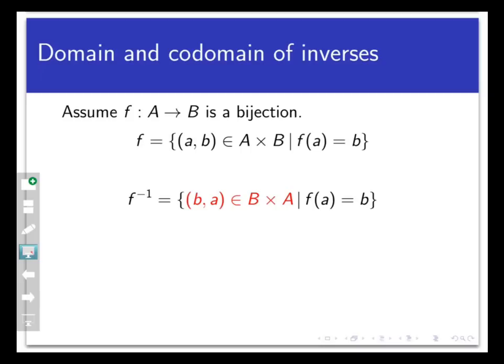For the duration of this video, let's assume that f going from A to B is a bijective function. That means that not only does f inverse exist as a set of pairs, but that f inverse is a function itself. Let's think about the domain, the codomain, and the process by which f inverse works.